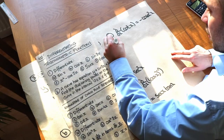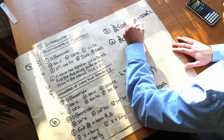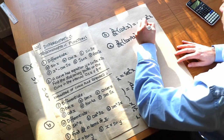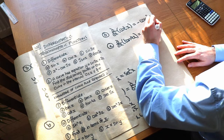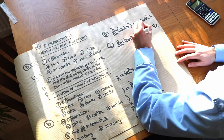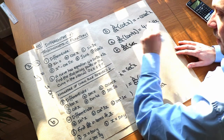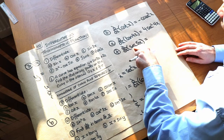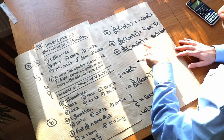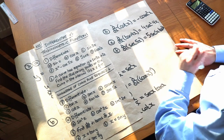Using the chain rule for tan 4x: differentiate the outer function — tan of blah gives sec² of blah — then multiply by the derivative of the inner function 4x, which is 4. So the result is 4 sec²(4x). For sec 5x: sec of blah differentiates to sec blah tan blah, times the derivative of 5x, which is 5, giving 5 sec(5x) tan(5x).